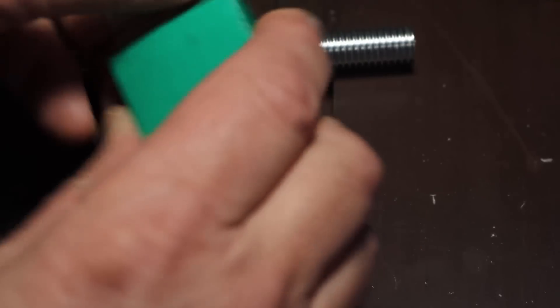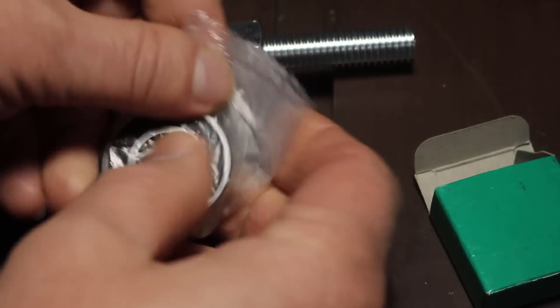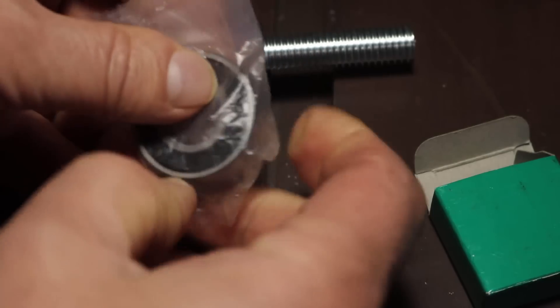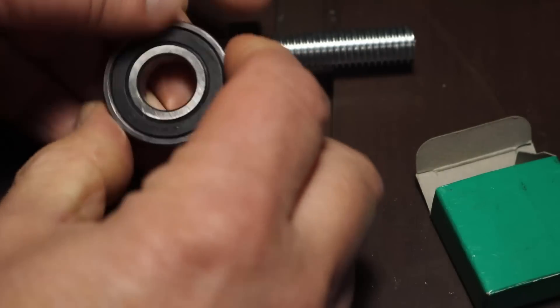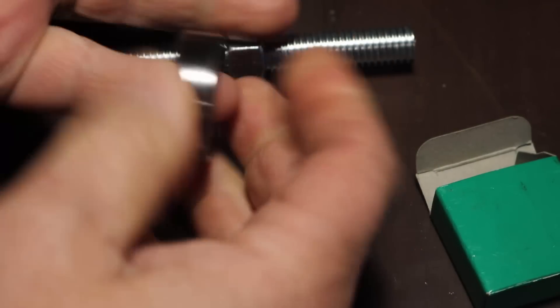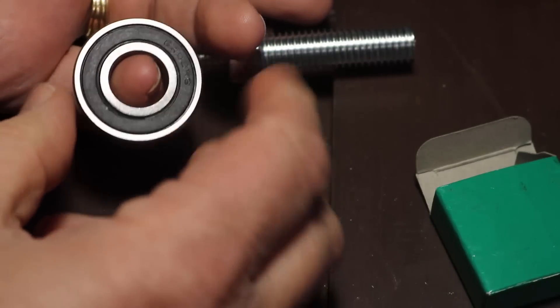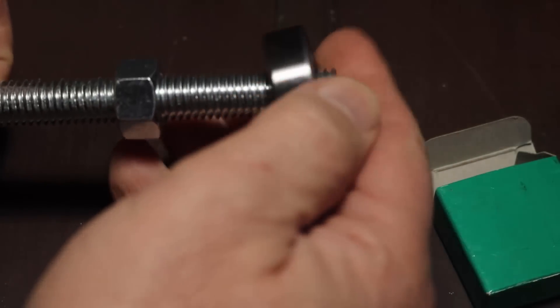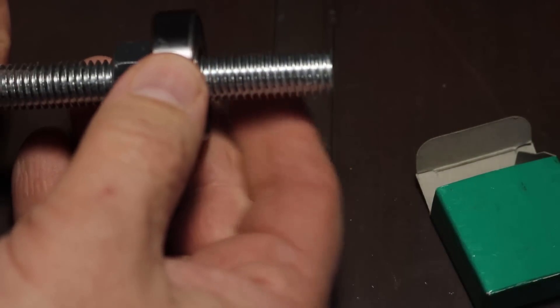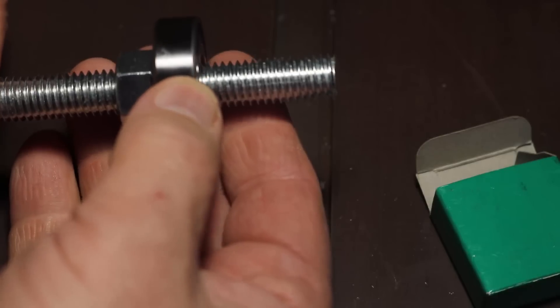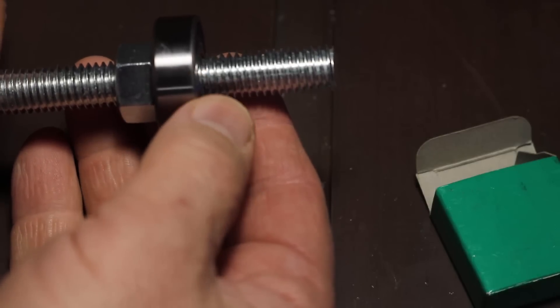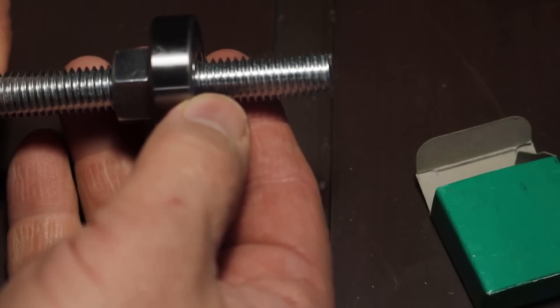These are the bearings I'm going to use. If you noticed on the box, the last part of the code was 2RS, which means they are rubber sealed on both sides. This keeps filings and whatnot from getting into the workings and gumming them up. These are fairly cheap bearings, only about three bucks. I suspect they're Chinese made. They're not exactly the fit I need for this half-inch rod, so I'm going to have to make some bushings for it.